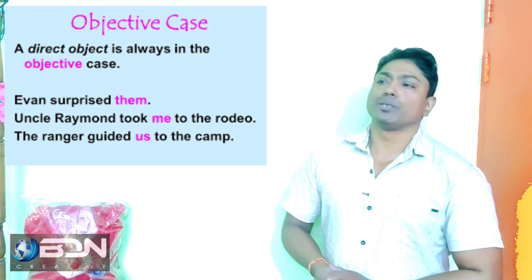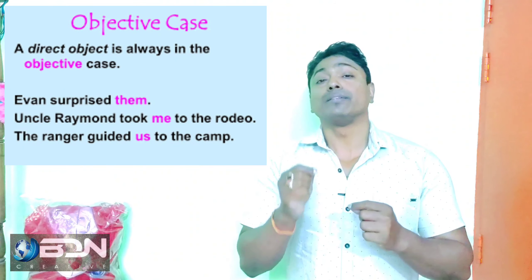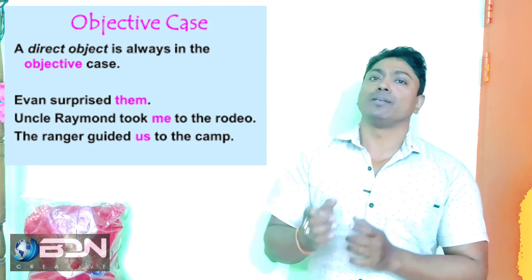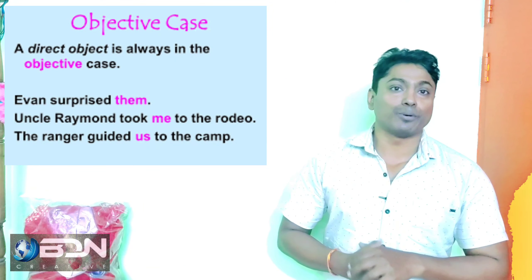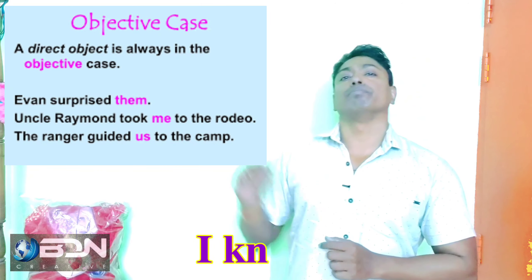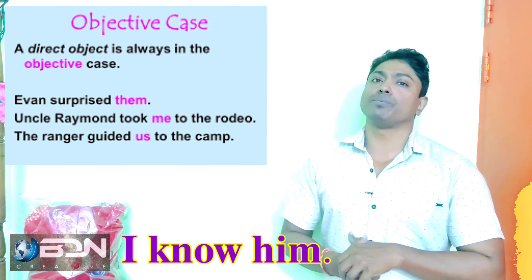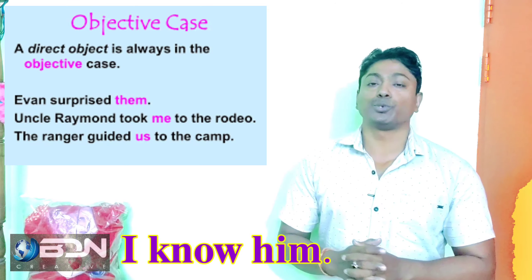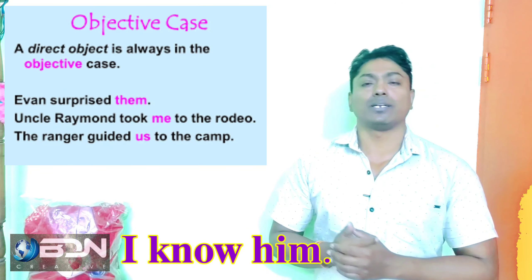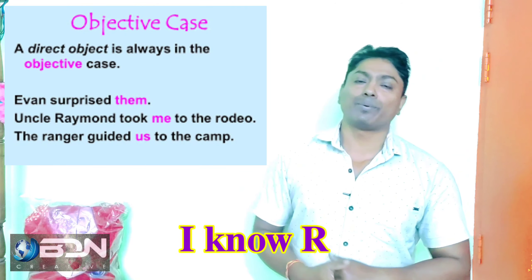Now the next one is objective case. What is objective case? Very simple: when a noun or pronoun is used as the object of a verb, it is in objective case. For example: 'I know him.' Here him is used as the object, so him is in objective case.